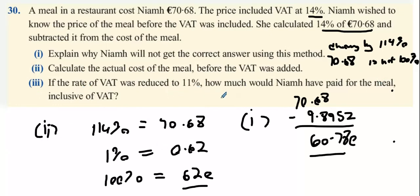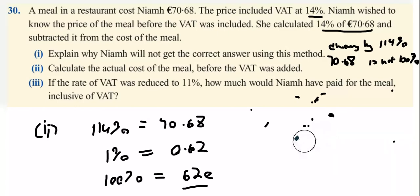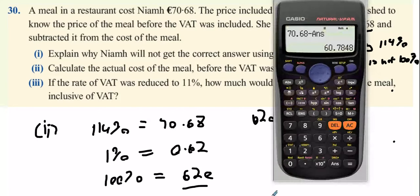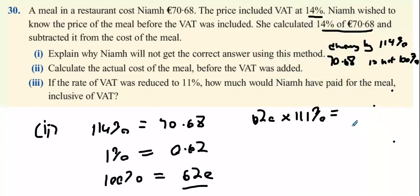Part three: If the rate of VAT was reduced to 11%, how much would Niamh pay for the meal? We got the price of the meal is €62 before VAT was added. So we're going to multiply €62 by 111%, which equals €68.82.